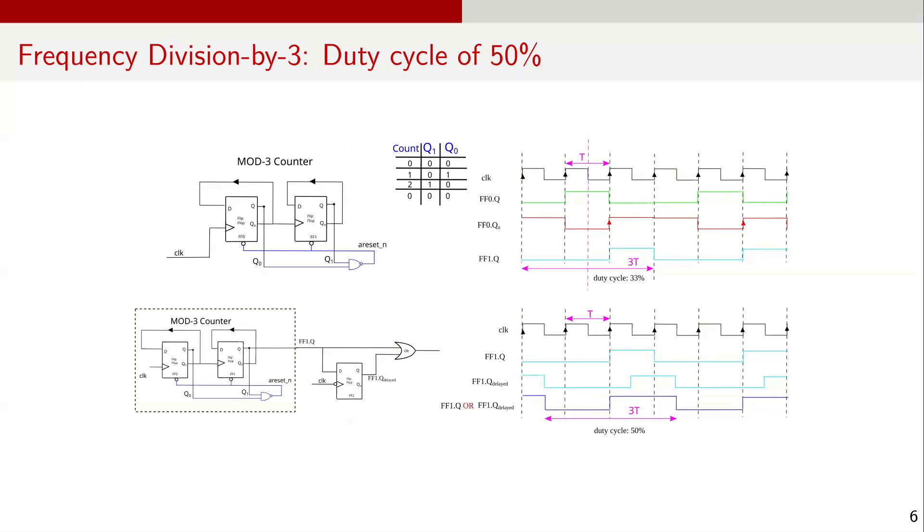Now, let's discuss how we can generate a signal of frequency f over 3 with 50% duty cycle from a signal that has 33% duty cycle. Looking closely at the waveform FF1Q, we can see that FF1Q is high for one clock cycle and low for two clock cycles. Let's recall the concept which we discussed earlier. If the input is synchronous with the rising clock edge but is sampled at the falling clock edge, the output is delayed by half clock cycle, that is T over 2.